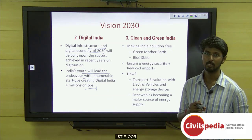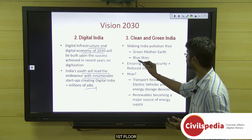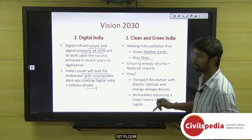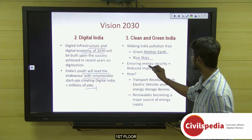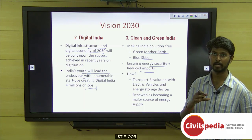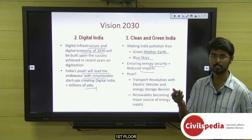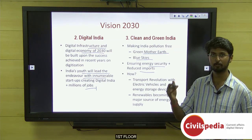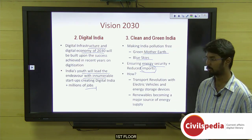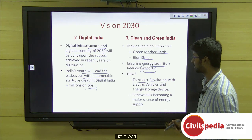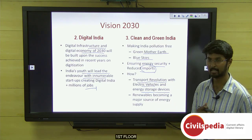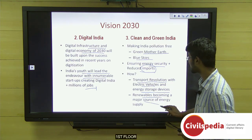The third dimension is clean and green India — achieving clear skies free of pollution and pollution-free land. It aims to ensure energy security and reduced imports by focusing on renewables, switching away from fossil fuels. To enhance renewables, the government will focus on a transport revolution by introducing electric vehicles and energy storage devices, making renewables a major source of energy supply.